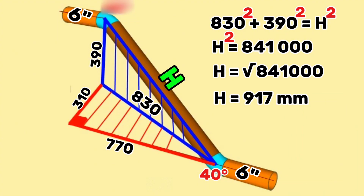917 millimeters is the hypotenuse of the vertical blue right triangle and is also the distance between the centers of the 40 degree butt weld elbows. So the overall length between the centers of the 40 degree butt weld cut elbows is 917 millimeters. If we subtract the lengths of the 40 degree cut elbows and the gaps for welding from this total length, we can find the length of the brown color pipe section.